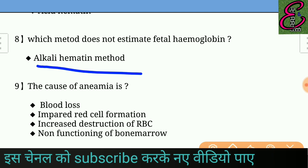Question number nine: What are the causes of anemia? Answer: 1. Blood loss. 2. Impaired red cell formation. 3. Increased destruction of RBC. 4. Non-functioning of bone marrow.